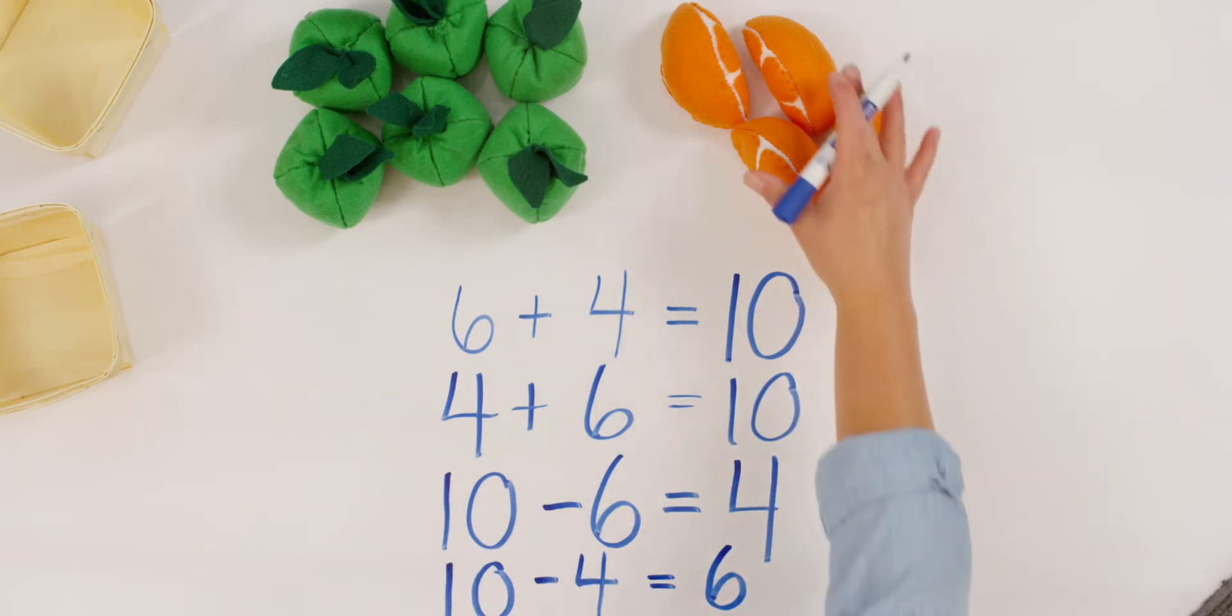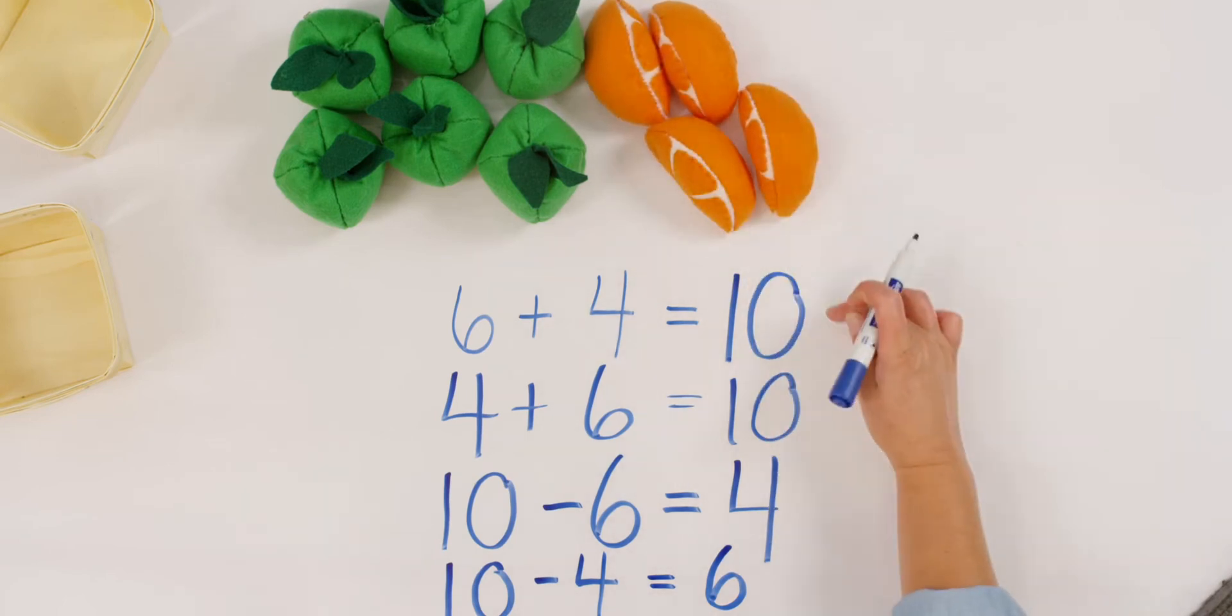Do you see how for one problem we can come up with four different addition and subtraction sentences? I love the way this all works with our number bonds. So we'll practice that some more next. Clear your board and we'll get ready for our next activity.